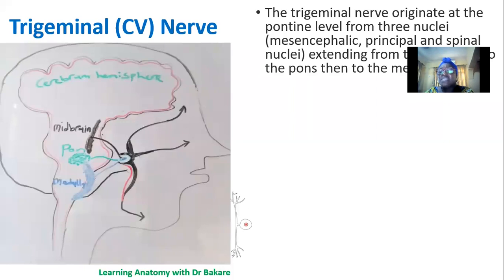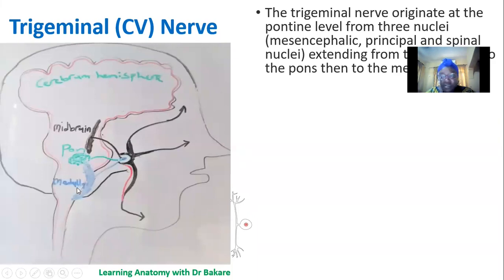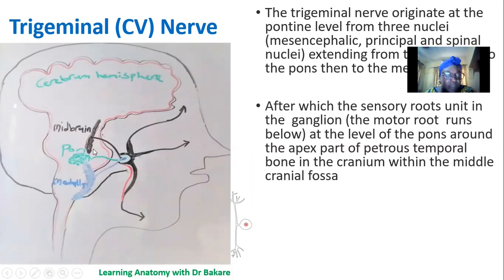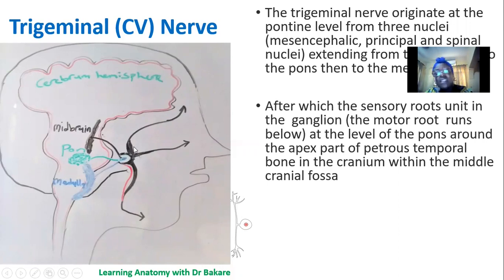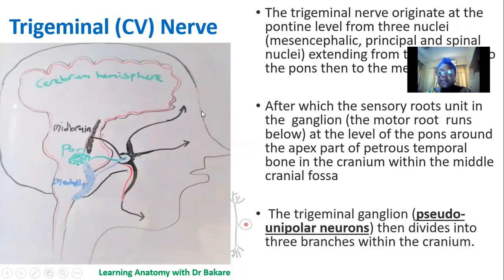The trigeminal nerve is the fifth cranial nerve and it emerges from three nuclei — that is why it is the biggest cranial nerve. It emerges from nuclei in the midbrain, the pons, and the medulla, and has a very large root. These roots unite around the level of the pons in the trigeminal ganglion. This ganglion is a collection of the sensory roots from the three nuclei, still located within the cranial fossa. The trigeminal ganglion is made up of pseudo-unipolar neurons, meaning they have a false presentation as if they are unipolar, but they have two extensions from the cell body.